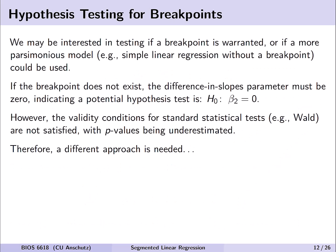A natural question is: do we even need breakpoints, or could we use a simpler model? If the breakpoint doesn't exist, the difference in slope beta 2 should be zero — suggesting a hypothesis H naught: beta 2 equals zero. However, based on how the segmented regression model is formulated, the validity conditions for standard statistical tests like the Wald test are not satisfied, meaning p-values would be underestimated, and a different approach is needed.